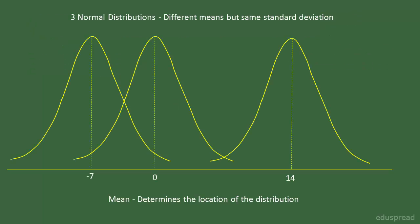Have a look at the following figure. I have drawn three normal distributions here, and these distributions have different means but same standard deviation. The mean of this distribution is minus 7, the mean of this distribution is 0, and the mean of this distribution is 14. Now you can see how the mean of a normal distribution determines the location of the distribution. This distribution has a mean of 0, this distribution is to the right of this distribution, and this distribution has a mean of 14, so it is to the right of this distribution.